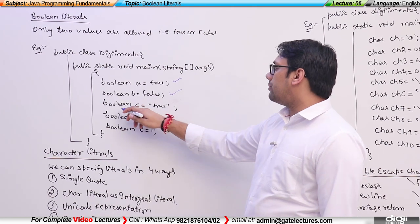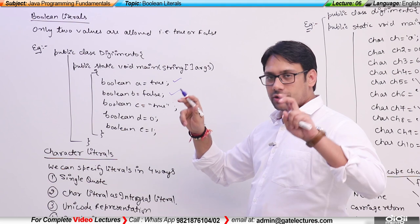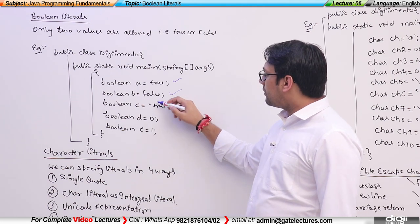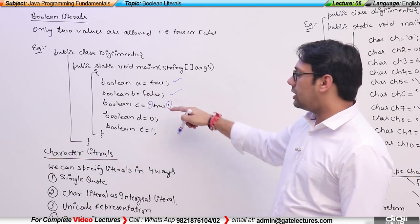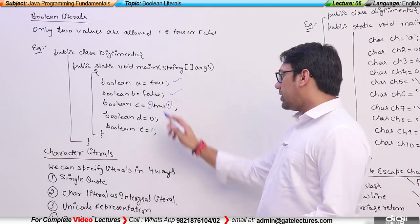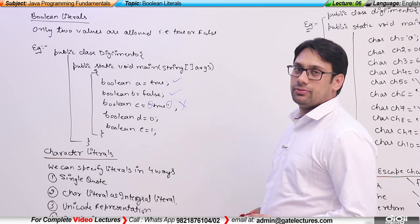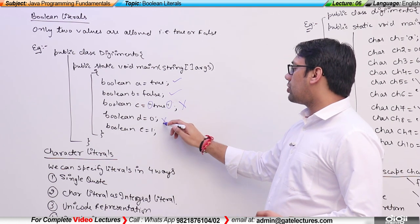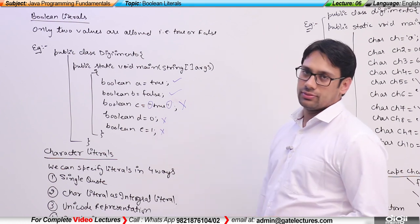But if I try to say Boolean c is equal to inverted commas true, because of these inverted commas this is not a Boolean value — this is a string. Boolean variables cannot take a string as input, so this is not valid. If I try Boolean d is equal to 0, that is also not valid, and Boolean e is equal to 1, that is also not valid.